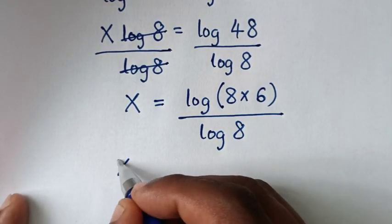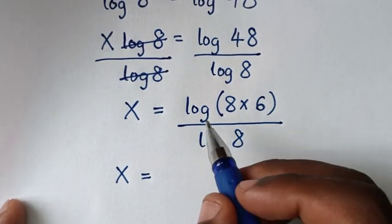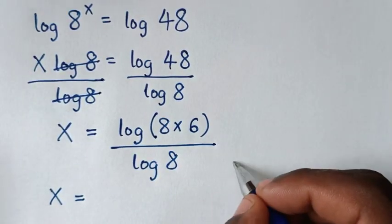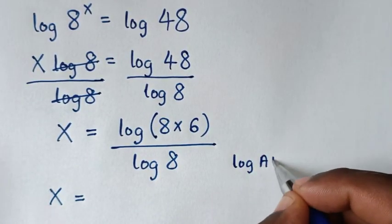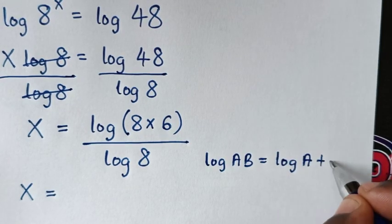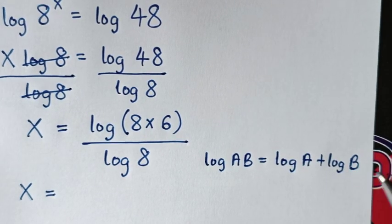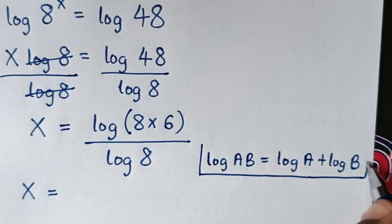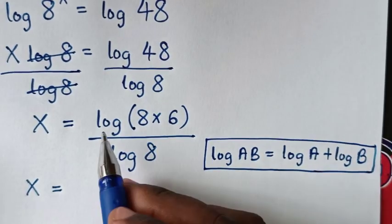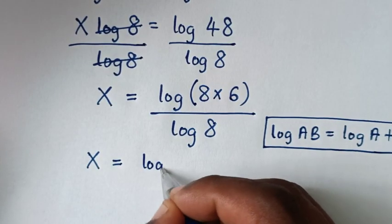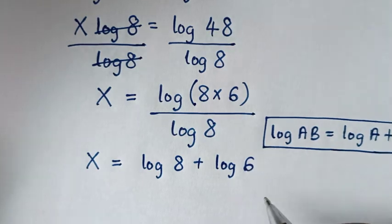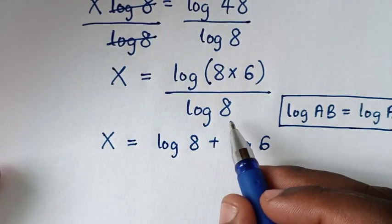In the next step, x equals log of 8 times 6 over log of 8. This is in the form of log(a × b), which is equal to log a plus log b. Applying this formula, log of 8 times 6 is the same as log of 8 plus log of 6, divided by log of 8.